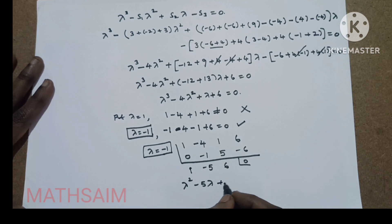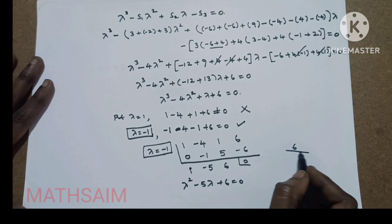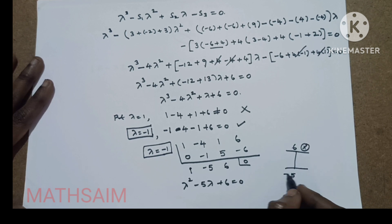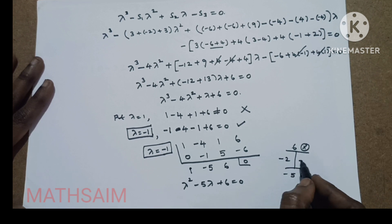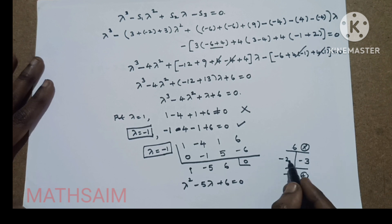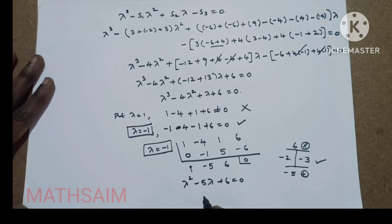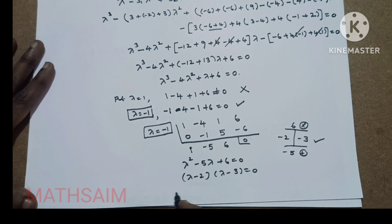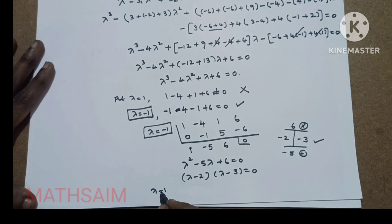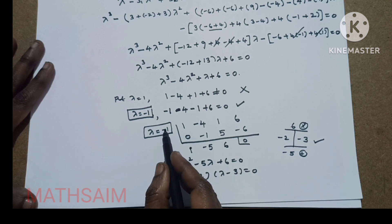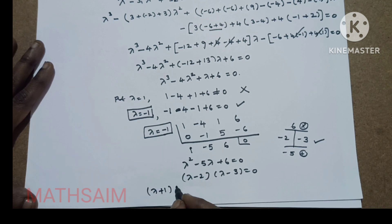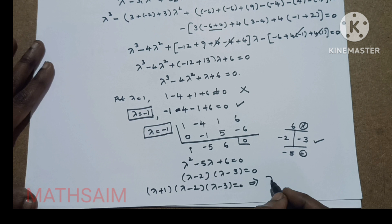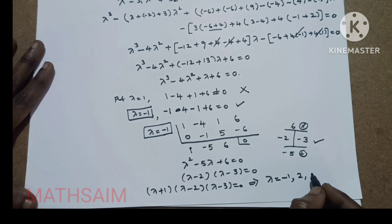The resulting quadratic equation is: lambda squared minus 5·lambda plus 6 equals 0. Factorizing: we need two numbers that multiply to 6 and add to minus 5, which are minus 2 and minus 3. So this factors as lambda minus 2 times lambda minus 3 equals 0. Therefore the full factorization is lambda minus 1 times lambda minus 2 times lambda minus 3 equals 0, giving eigenvalues lambda = minus 1, 2, and 3.